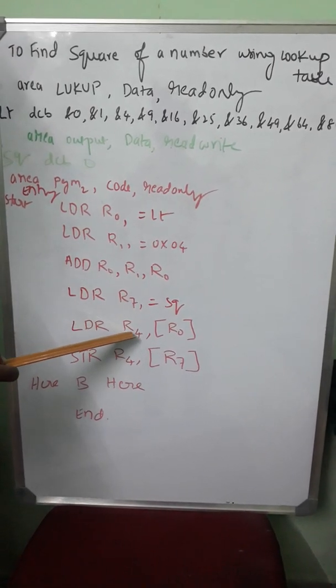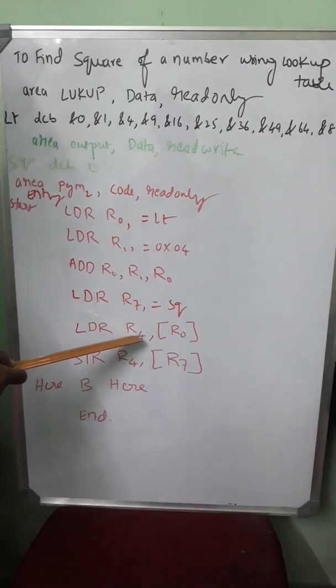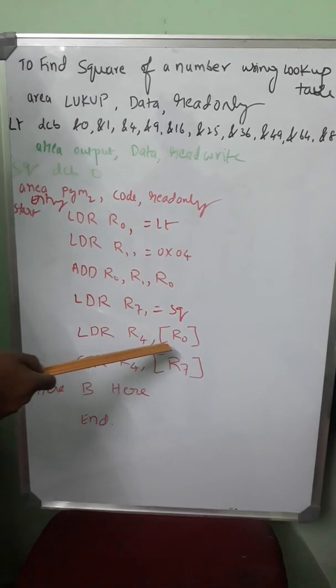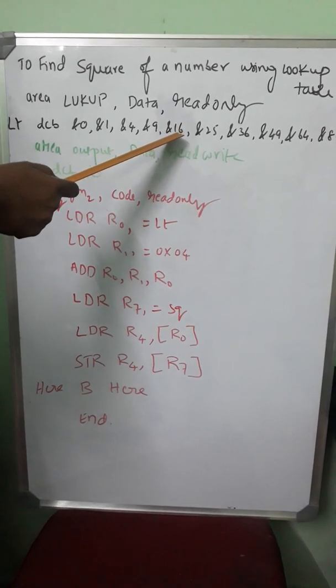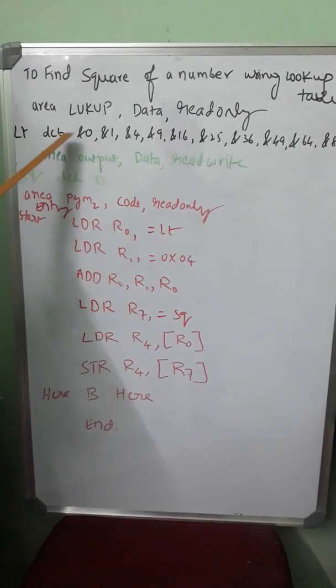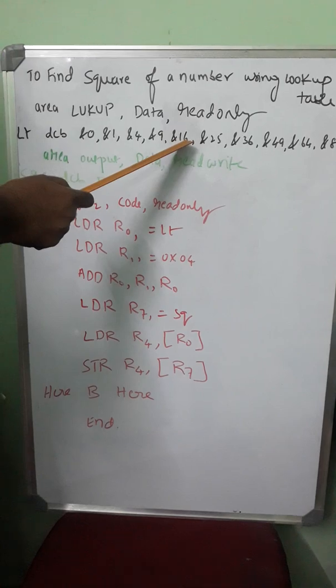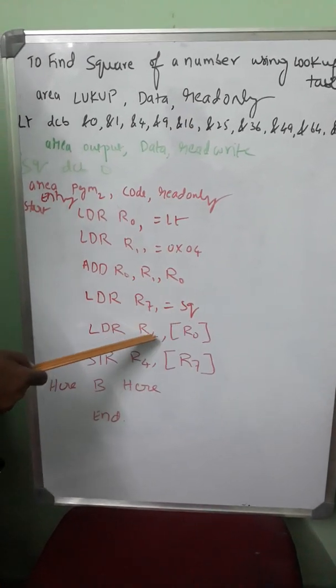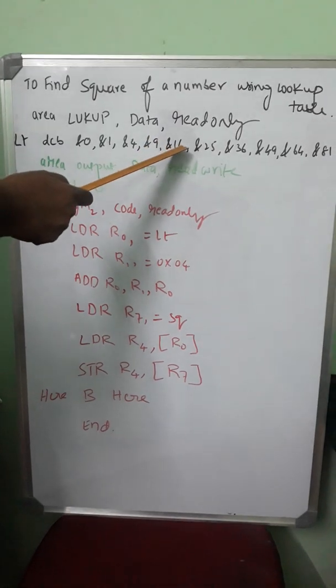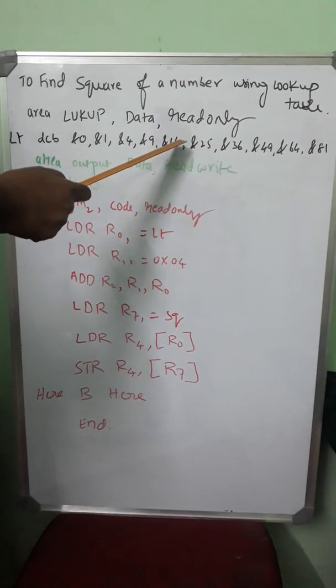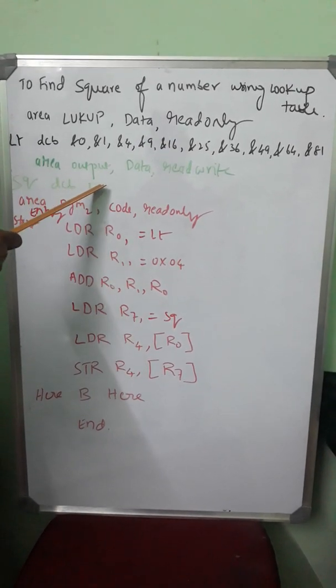Then LDR R4. R4 will get the content of the location pointed by R0. R0 is pointing to the 16 value, that is 4th location, LT plus 4th location, which has got 16. 16 comes to R4. Why am I taking to R4? Because 16 exists in one memory location.